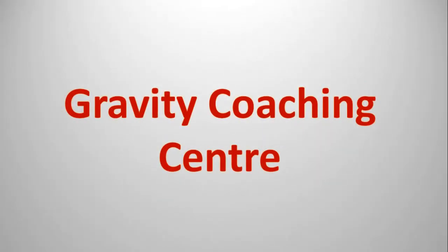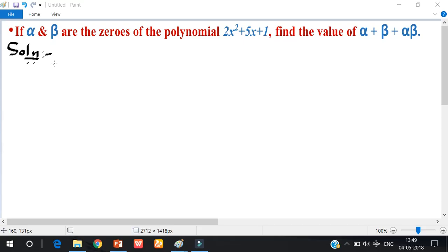Welcome to my channel friends. If alpha and beta are the zeros of the polynomial 2x² + 5x + 1, find the value of alpha plus beta plus alpha beta. Solution here.